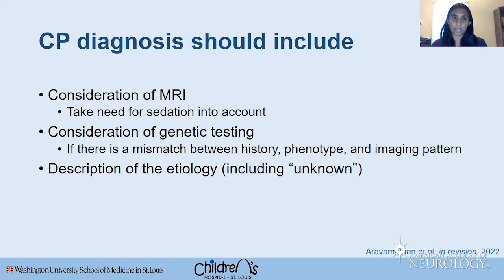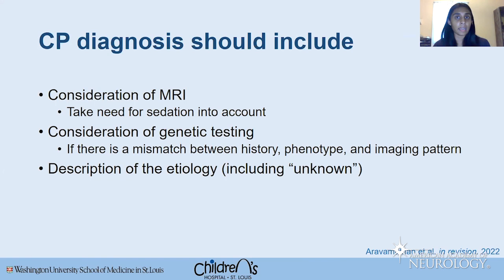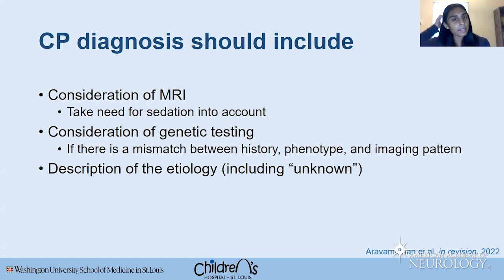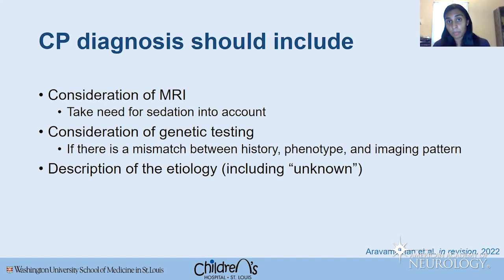Identifying etiology is important because the community wants to know, it guides screening for comorbidities and potential treatments, and it informs family planning. Once investigations are complete, you should describe the cause of CP to the family — because people have said they want to know. This should guide future diagnostics. Sharing uncertainty is also desired by the community: telling families 'you have CP based on clinical diagnosis but we don't know why — and here's what we're going to do to figure that out' is something I encourage everyone to do.